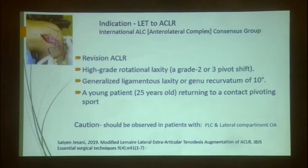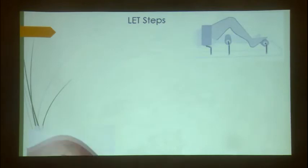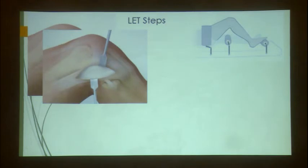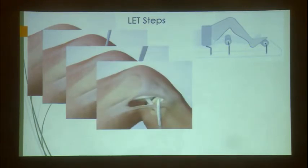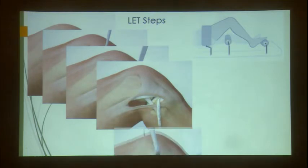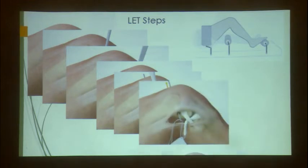Additional LAT indications include young patients returning to pivoting sports. Contraindications: PLC injury, lateral compartment OA, as LAT can over-constrain. The surgical steps: position lateral at 90 degrees, identify the lateral epicondyle and Gerdy's tubercle, make a 5–6 cm incision, harvest a 10 mm strip of ITB attached to Gerdy's tubercle, whip stitch with thick fiber wire as a screw may cut through, then drill 3–4 mm posterior and proximal to the lateral epicondyle.